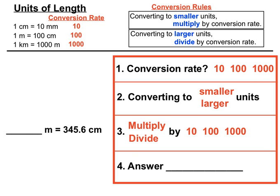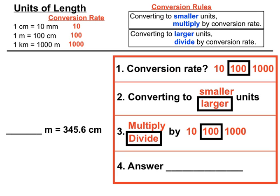Now we're converting centimetres back to metres — converting into a larger unit. The conversion rate between metres and centimetres is 100. Converting to a larger unit means we divide by 100, moving the decimal point two places to the left. Our answer is 3.456 metres.